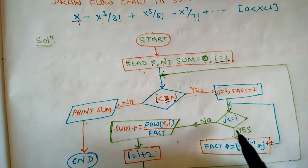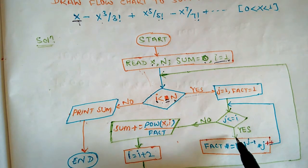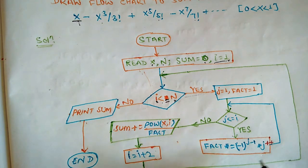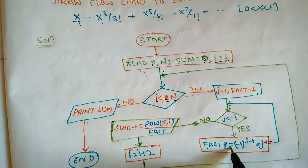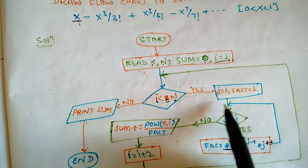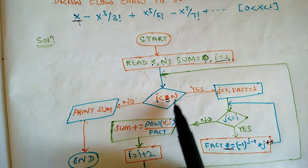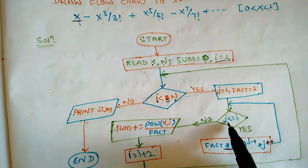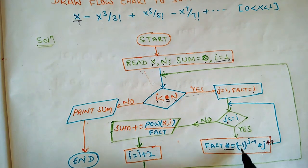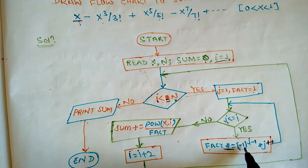We calculate factorial using: fact = fact multiplied by (-1) to the power (j - 1), then multiplied by j, with j post-incremented (j++). For example, when j = 1: (-1) to the power (1-1) = (-1)^0 = positive 1. So fact = fact × 1 × 1 = 1. Then j becomes 2 after post-increment.